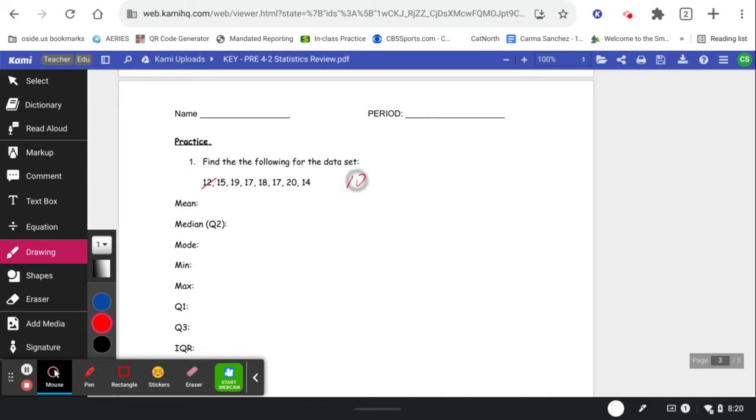So here's my 12 that I'm going to write first. 14 looks like it's next. 15, 17, 17 occurs twice. There's my mode. Then 18, 19, 20.